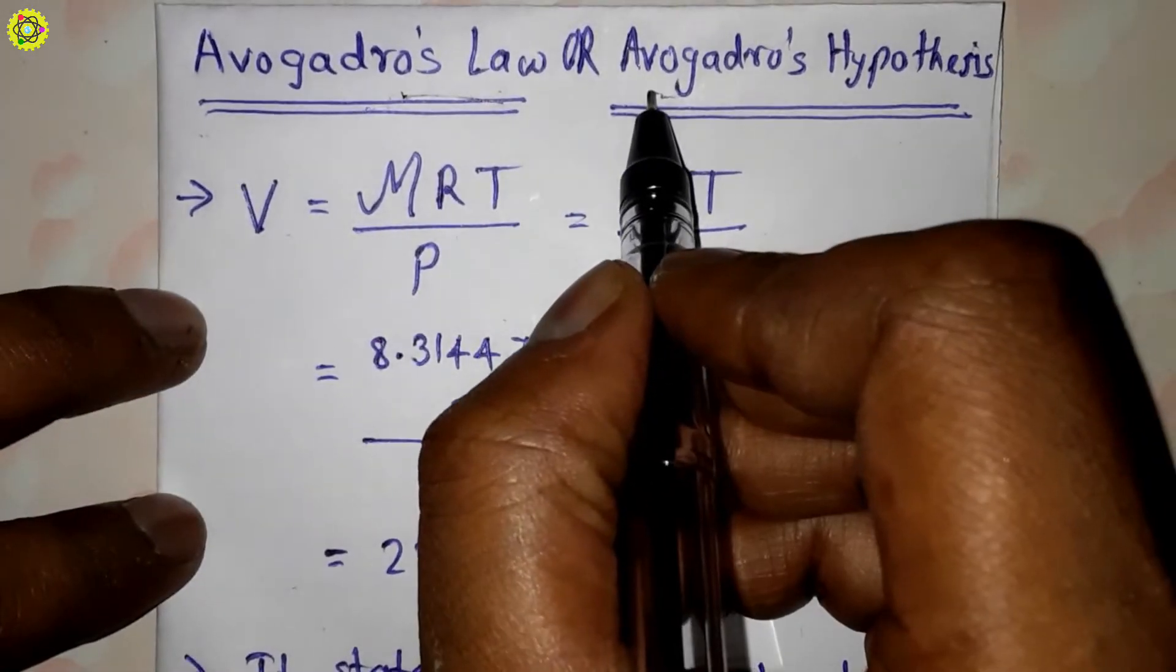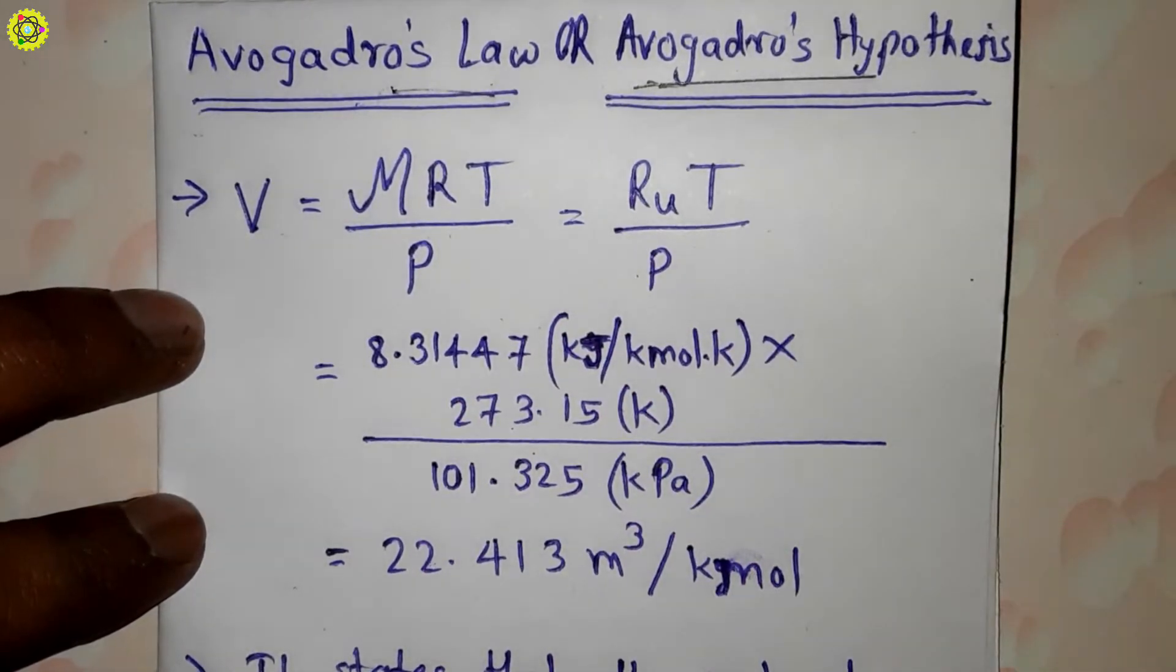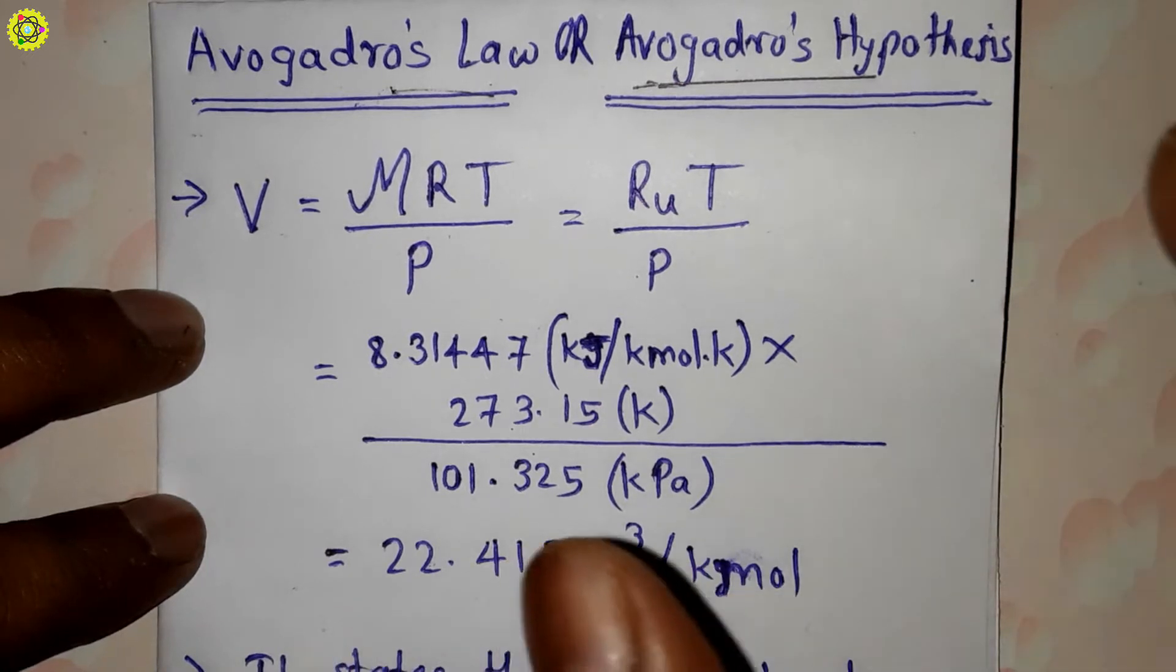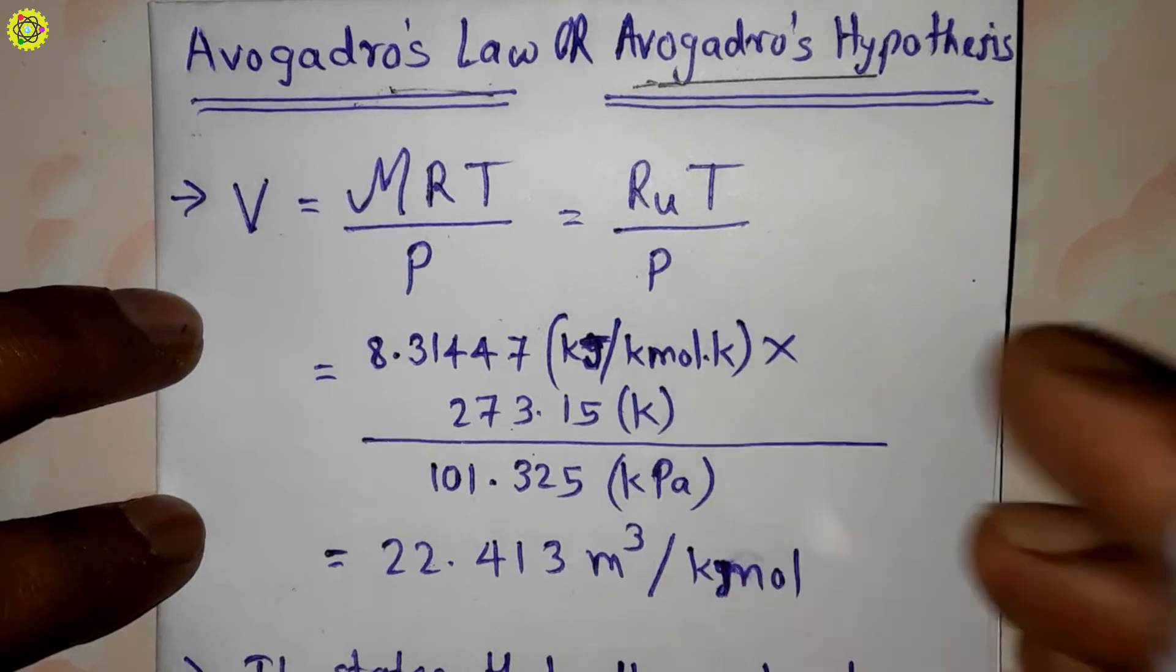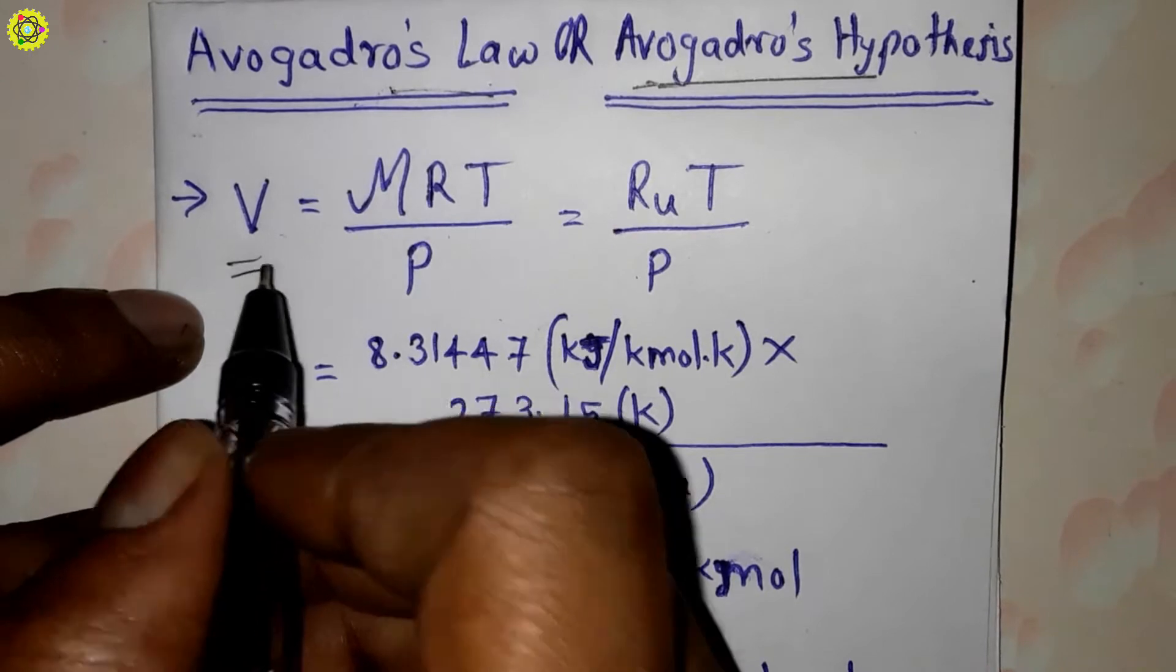Avogadro's Hypothesis. It says that all perfect gases occupy the same volume under the same, or you can call it identical, conditions of pressure and temperature. So see here, volume is